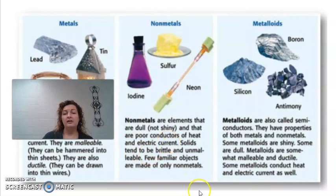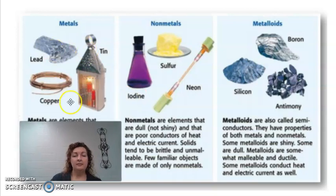Right now, non-metals right here, are elements that are dull, which just means they're not shiny. They are poor conductors of heat and electricity. They're solid. Solids tend to be very brittle, which means they break very easily. So they're not malleable. They're not ductile. Few familiar objects are made of only non-metals. So if you look, some good examples are iodine, sulfur, neon. I also want you guys to notice that the majority of these are really not solids. The majority of our non-metals are going to be gases. And if you notice the majority of our metals are solids. So that's a definite difference between them.